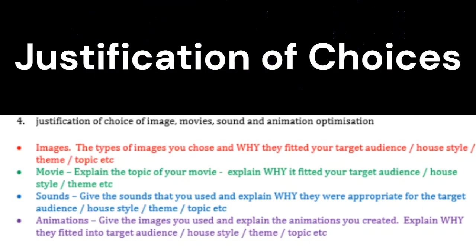Welcome. This tutorial is for the WJC Evaluation Part 4, which is about justifying why you chose the images, the movie, the sounds, and any animations that you did. For your images, you need to cover the type of images you've chosen, why they fitted your target audience, and how they matched your house style and theme.